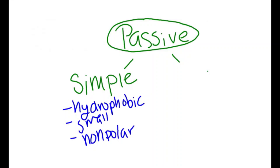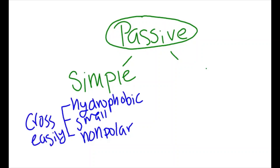Simple diffusion is the movement of hydrophobic, small, nonpolar molecules across the cell membrane. These types of molecules can dissolve in the lipid bilayer of the membrane, crossing it with ease.